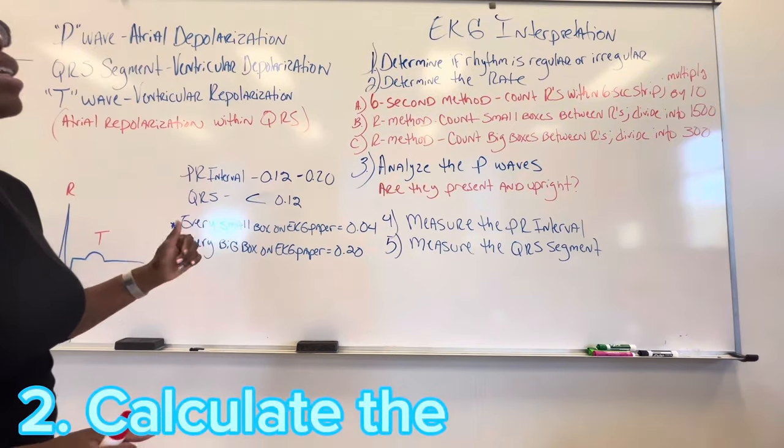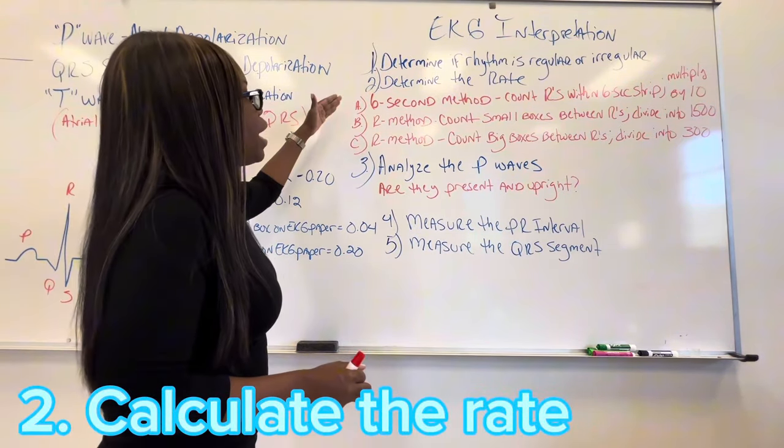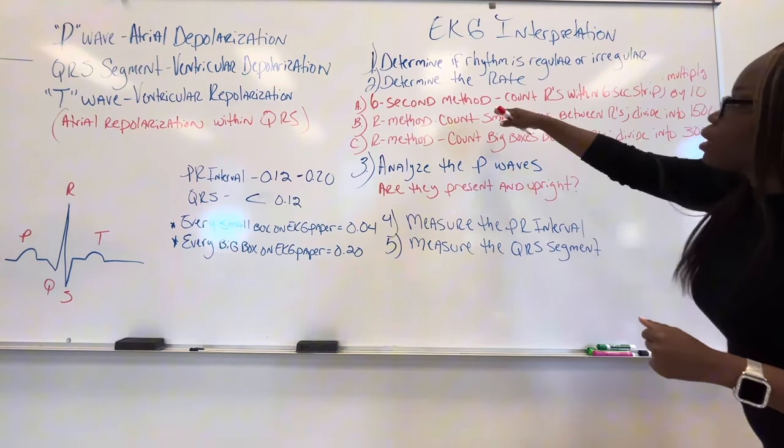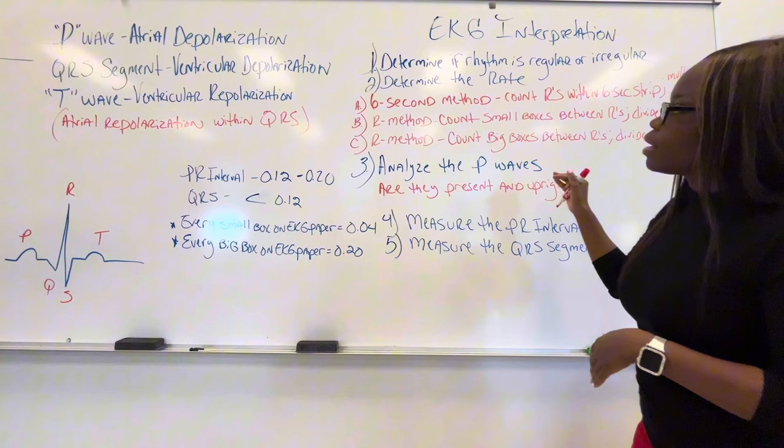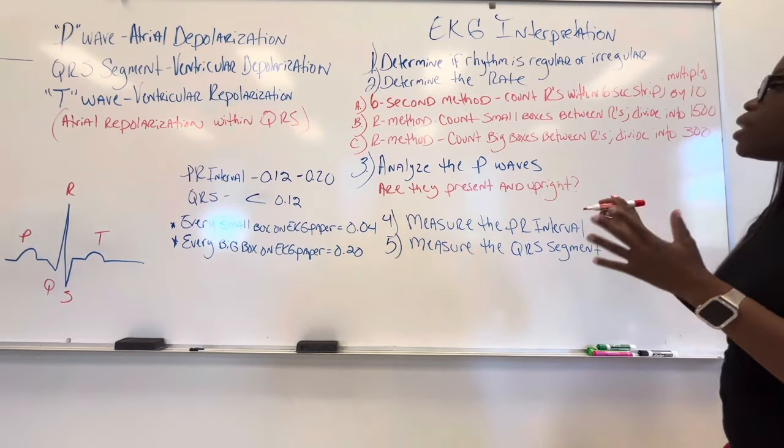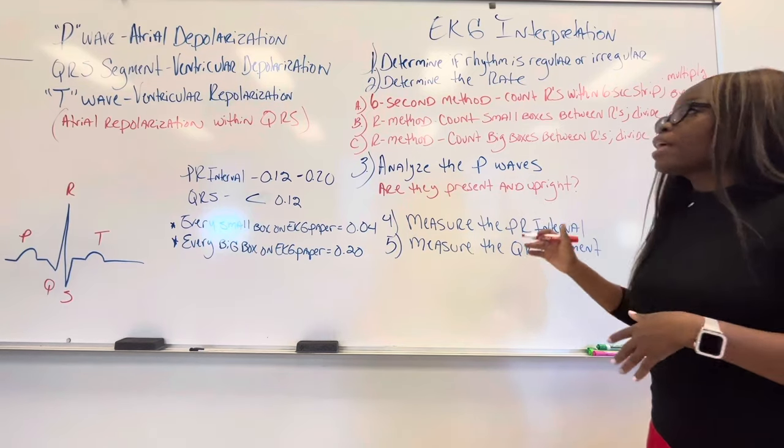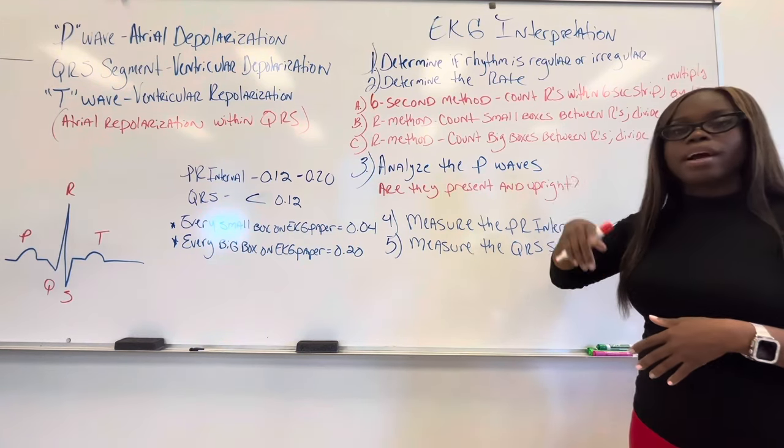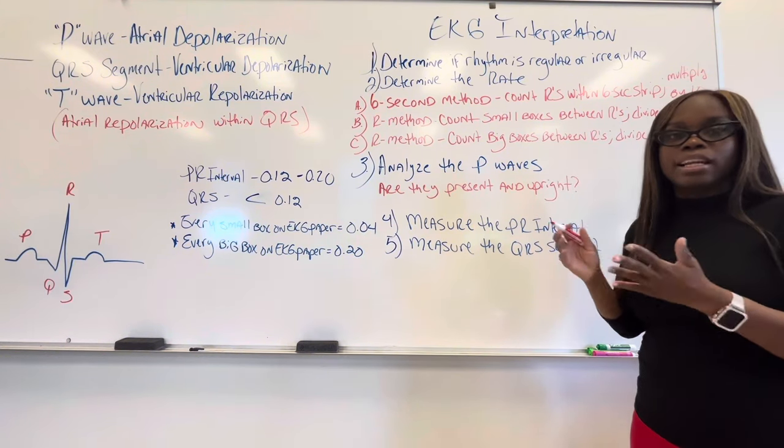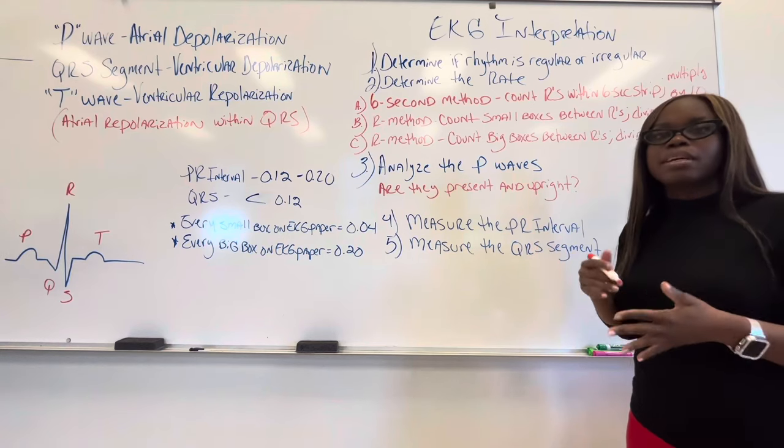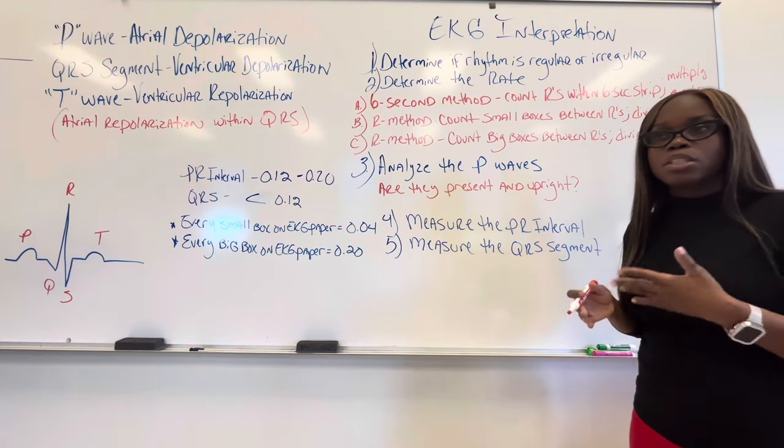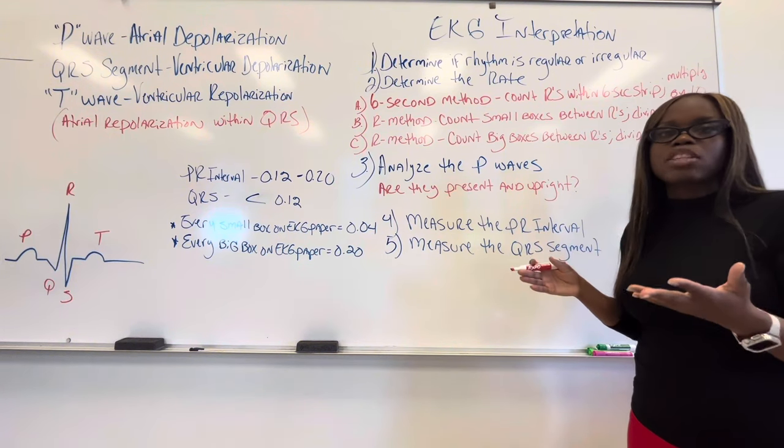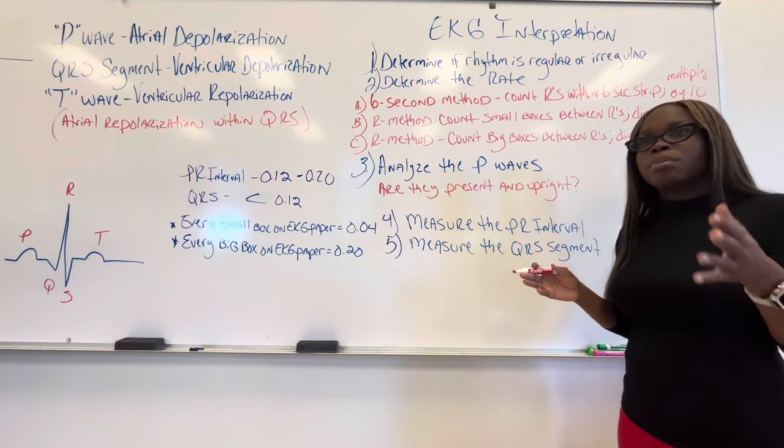The next thing you want to do is determine the rate. Now, there's three ways that we can determine a heart rate. Let's look at the six second method. The six second method is the easiest method. It's not the most accurate, but it is the easiest method because all you're doing is counting the number of R's within a six second strip, and then you're multiplying that number by 10. So if you have a six second strip and you count seven R's or seven QRS segments, then you multiply it by 10. And that's going to give you a heart rate of 70. It's not as accurate because it's rounding off. Every number that you get is going to be a multiple of 10. They say it's more accurate with patients who have an arrhythmia.